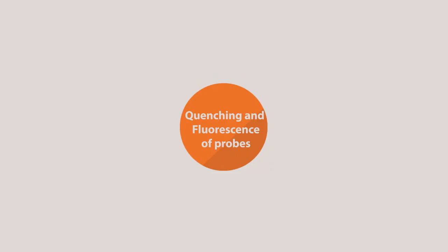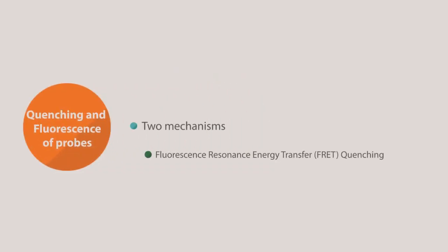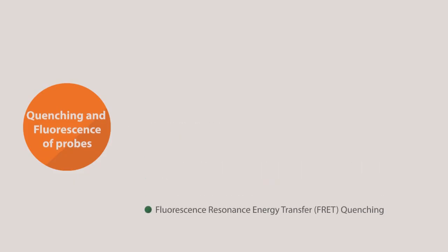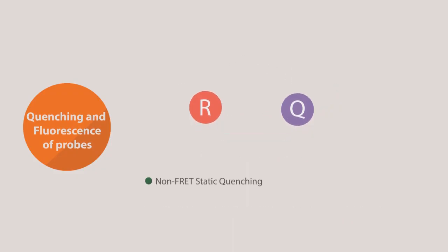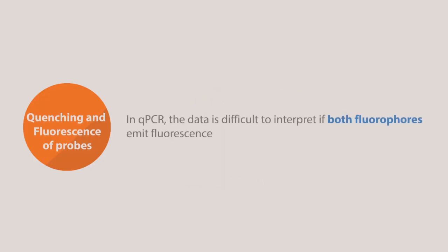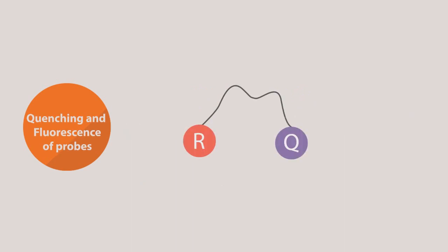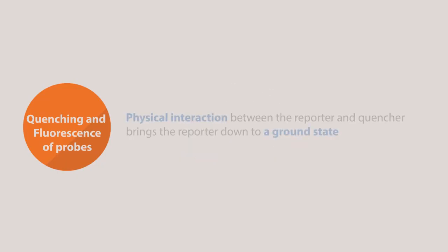The quenching and fluorescence of the probes are explained by two mechanisms: fluorescence resonance energy transfer, or FRET quenching, and non-FRET static quenching. In FRET quenching, when the donor fluorophore is excited by a photon, it transfers the energy to the acceptor fluorophore through dipole-dipole interactions. In non-FRET static quenching, the reporter and quencher are close in proximity. In qPCR, the data is difficult to interpret if both fluorophores emit fluorescence. Therefore, quencher dyes in TaqMan probes are usually dark and do not emit their own fluorescence. The physical interaction between the reporter and quencher brings the reporter down to a ground state, which quenches the reporter's fluorescence.